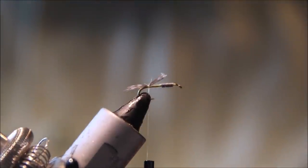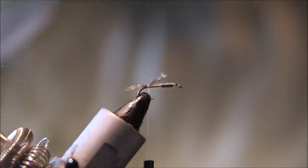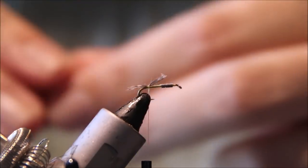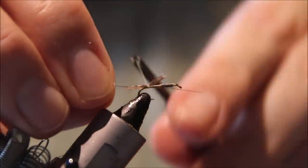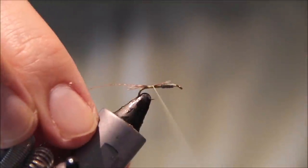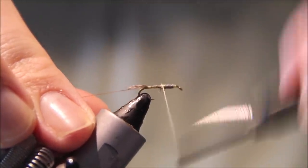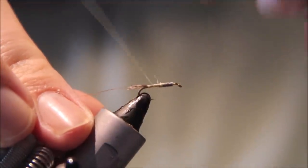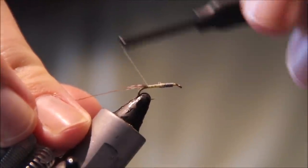For the rib I'm using brown thread - 10-aught Vivas. Adjust the thread diameter to suit what you're tying. Catch that in, then tidy up the length of the abdomen. Cover everything up and put a taper in.